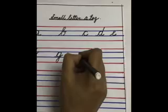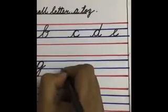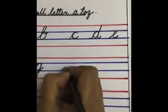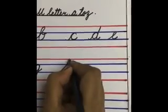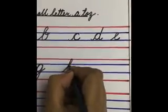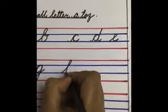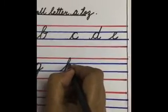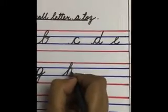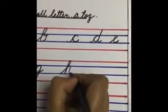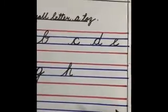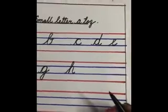Now from the third line, join up to the first line, come down and like this. This is cursive small letter H.